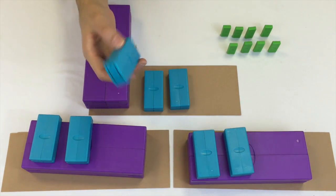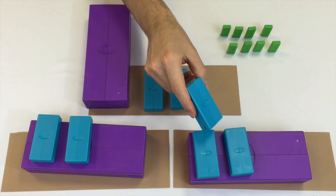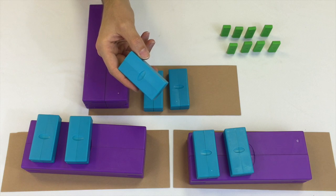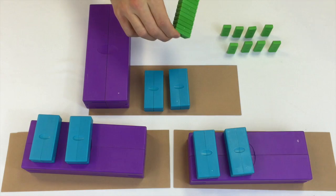Now I have one ten left over. If I gave this to any of the groups it wouldn't be fair. It'd have one more ten than the other groups. So I have to open it up. Pass out the ones inside.